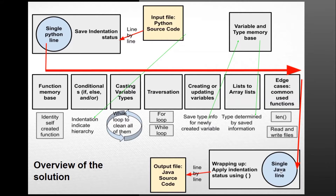After that, it wraps up the current Python line with the proper Java syntax using special characters, and then writes it into the Java output source file. Along this process, there's a part that looks at universal information — not just local to one Python line — such as the variable and type memory tracking.